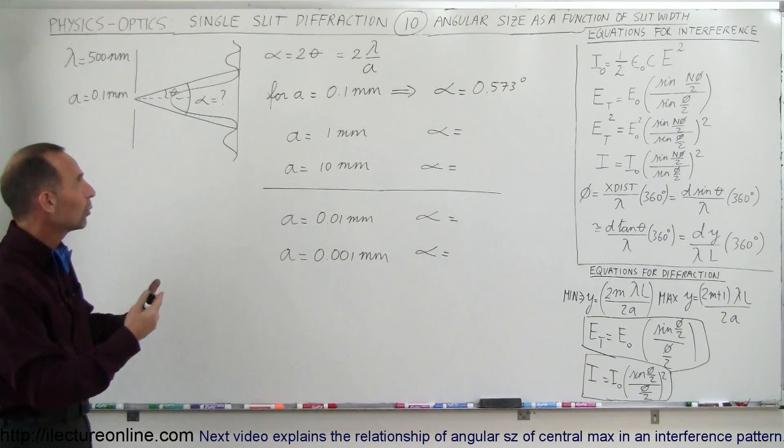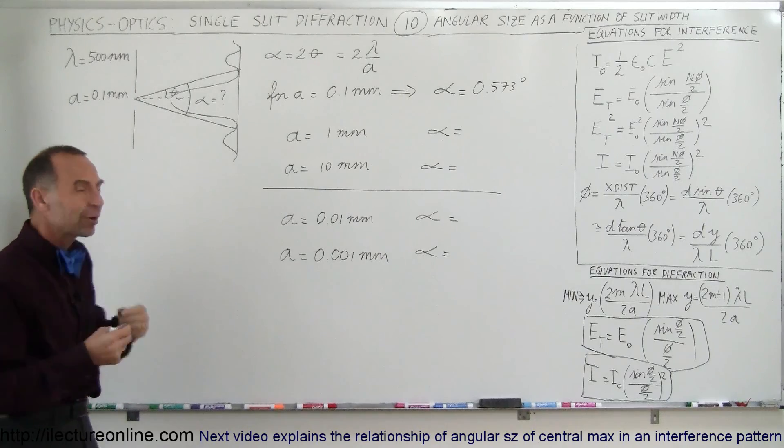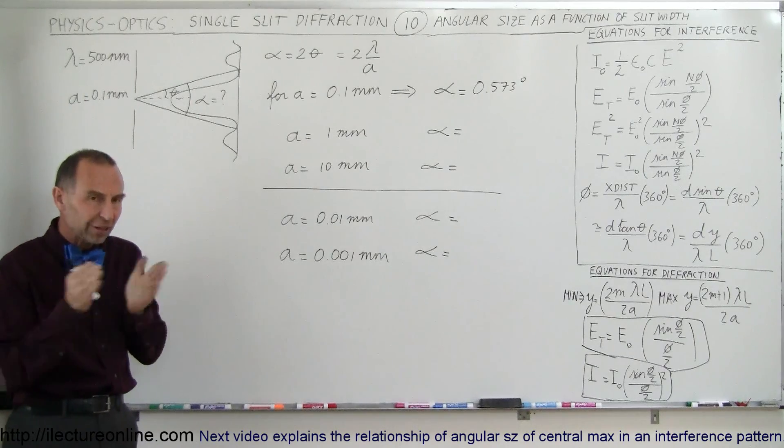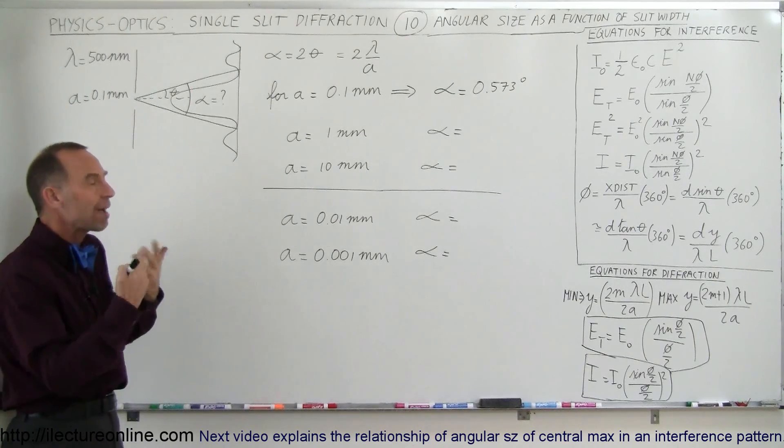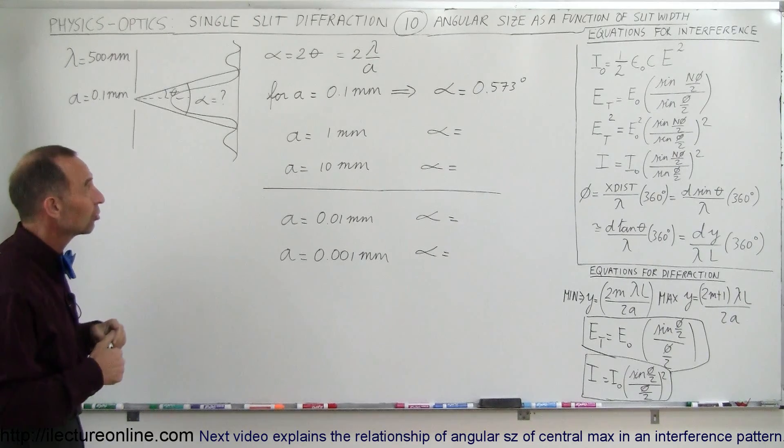Of course it depends on the slit width, it depends on the wavelength, but for a given wavelength, as the slit width changes, how does the central maximum width change? How does the diffraction pattern change?